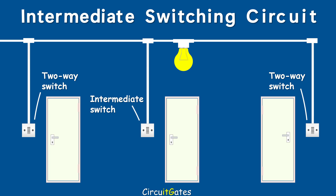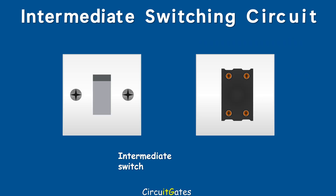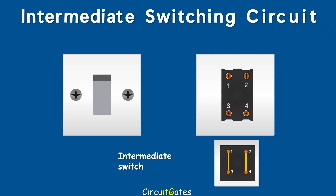An intermediate switch has four terminals, usually numbered 1 to 4. When the switch is operated, terminals 1 and 2 are connected to terminals 3 and 4 respectively, or terminals 1 and 2 are connected to terminals 4 and 3 respectively.